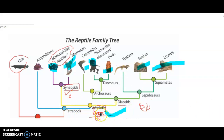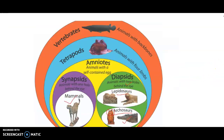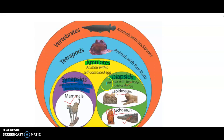The evolution of amniotes during the Carboniferous period is important because amniotes are the common ancestor of dinosaurs, humans, lions — you name it. Synapsids are animals with one hole behind the eye, while diapsids are animals with two holes behind the eye, such as lizards and crocodiles. Mammals have only one hole behind their eye.